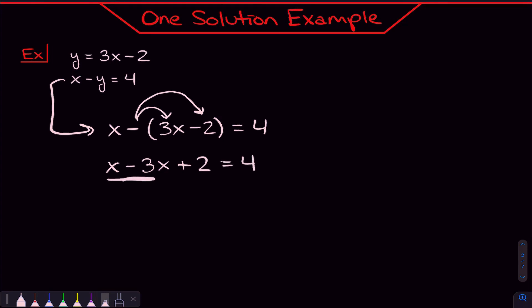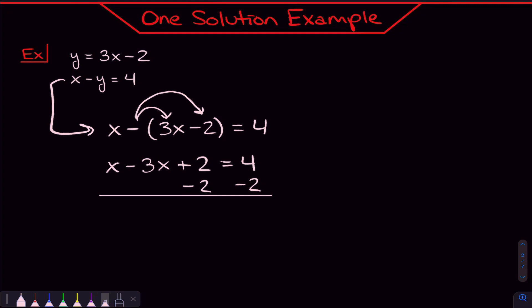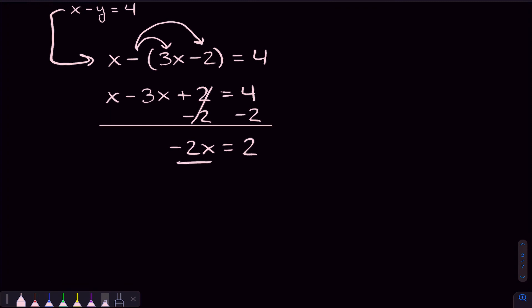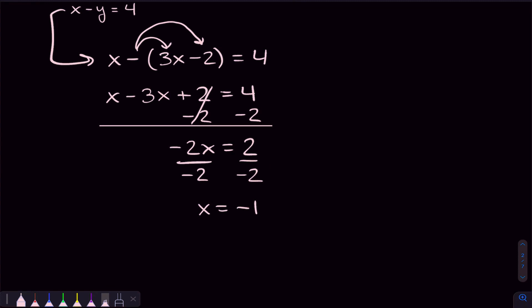Now X minus 3X — I can combine like terms there. I'll also get all the non-X pieces to the other side by subtracting 2 on both sides. That gives me 2 on the right-hand side, and on the left-hand side X minus 3X is negative 2X. I can solve for X by dividing by negative 2 on both sides, getting 2 divided by negative 2, which is negative 1.